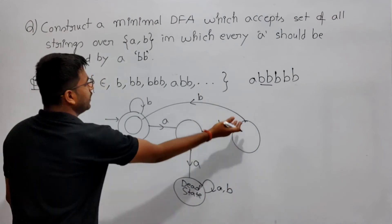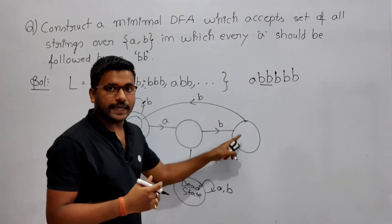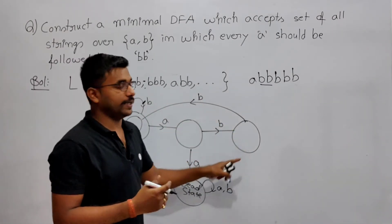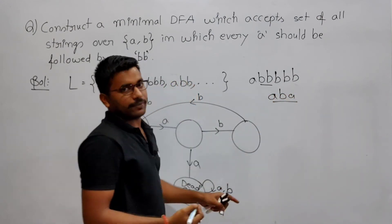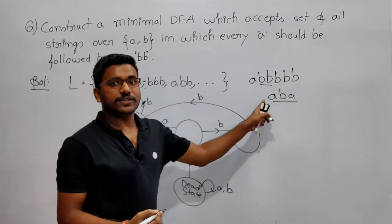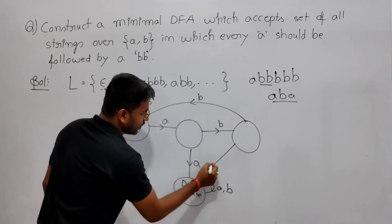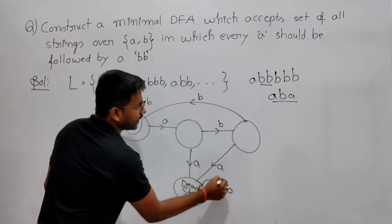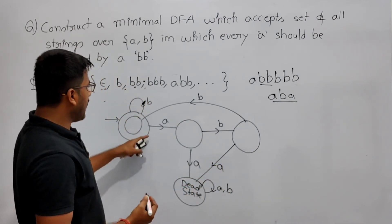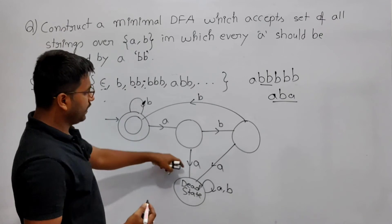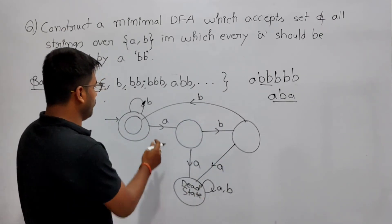So A-B is not accepted yet. But after A if you got B, and again if you are getting A — like the string A-B-A — it does not belong to the language, because after that A it should have at least two B's. So getting that second A is rejected — go to dead state. Now see, for every state I have given the transition for every input alphabet.